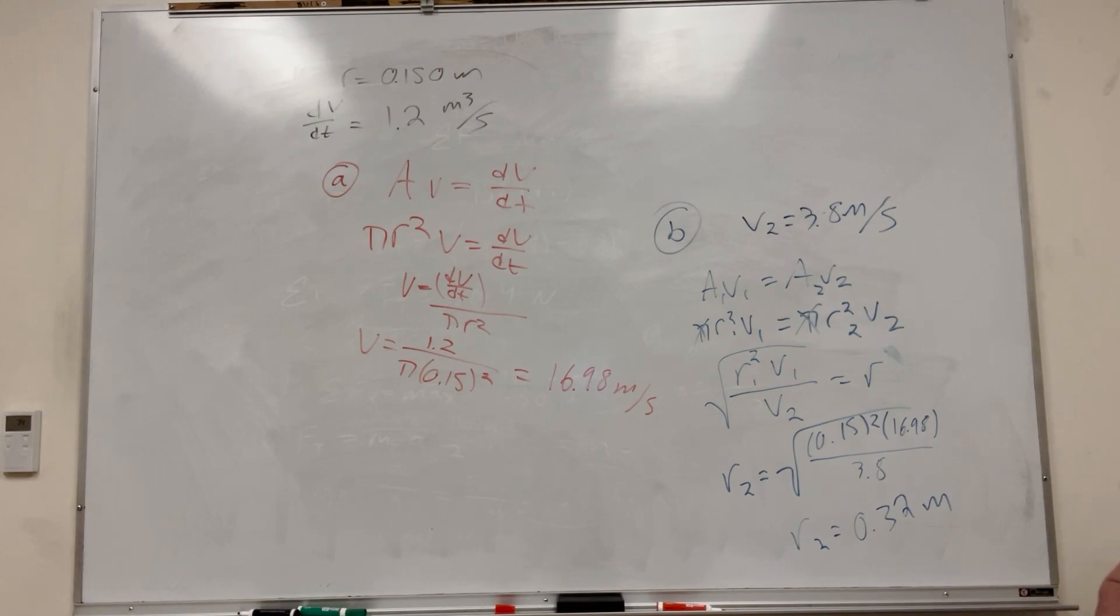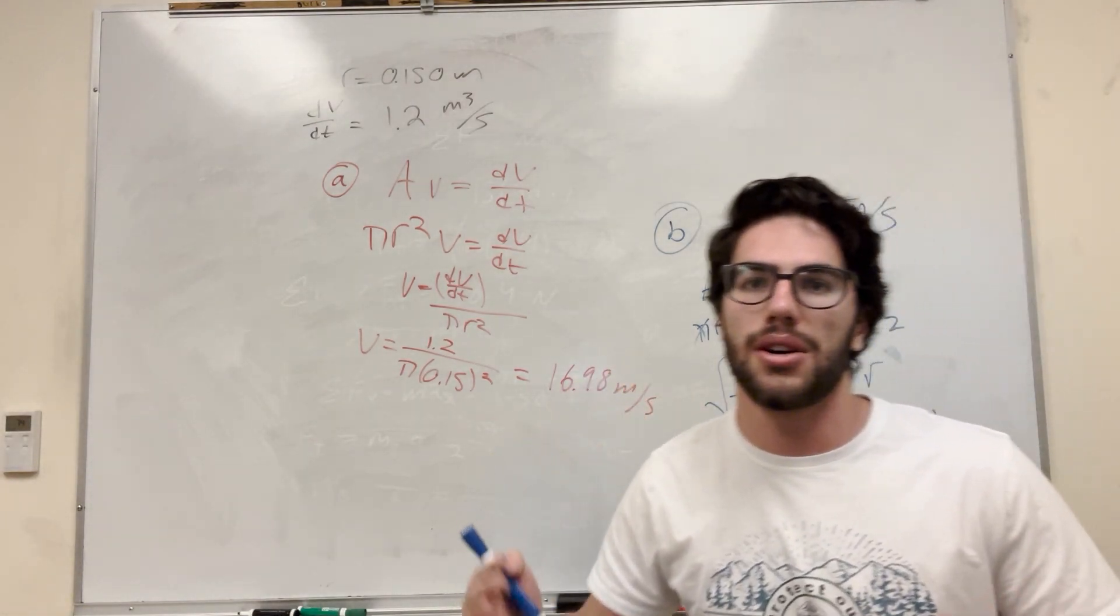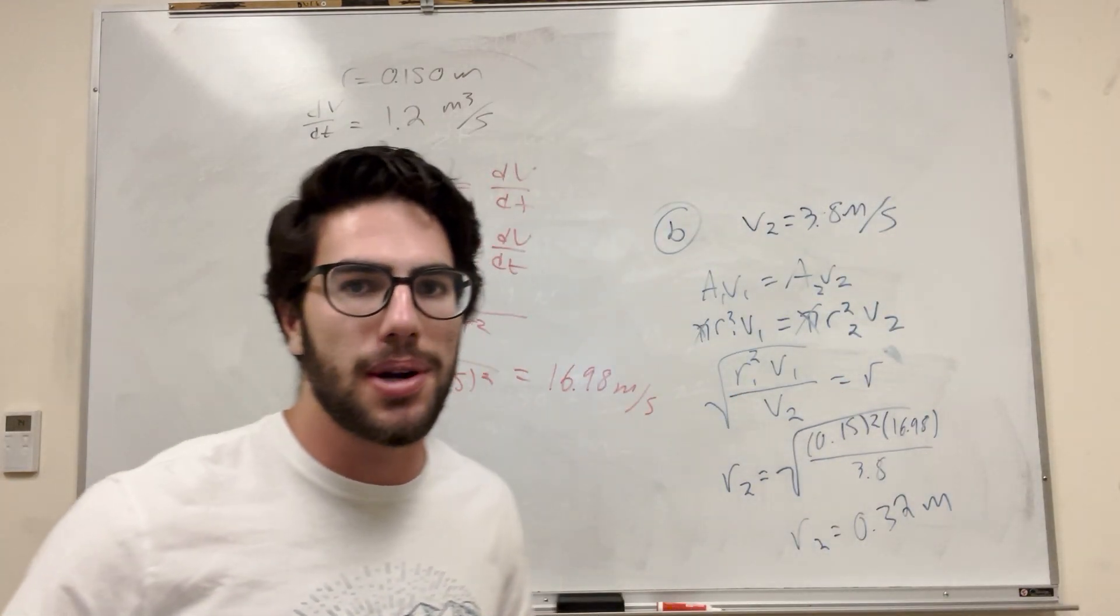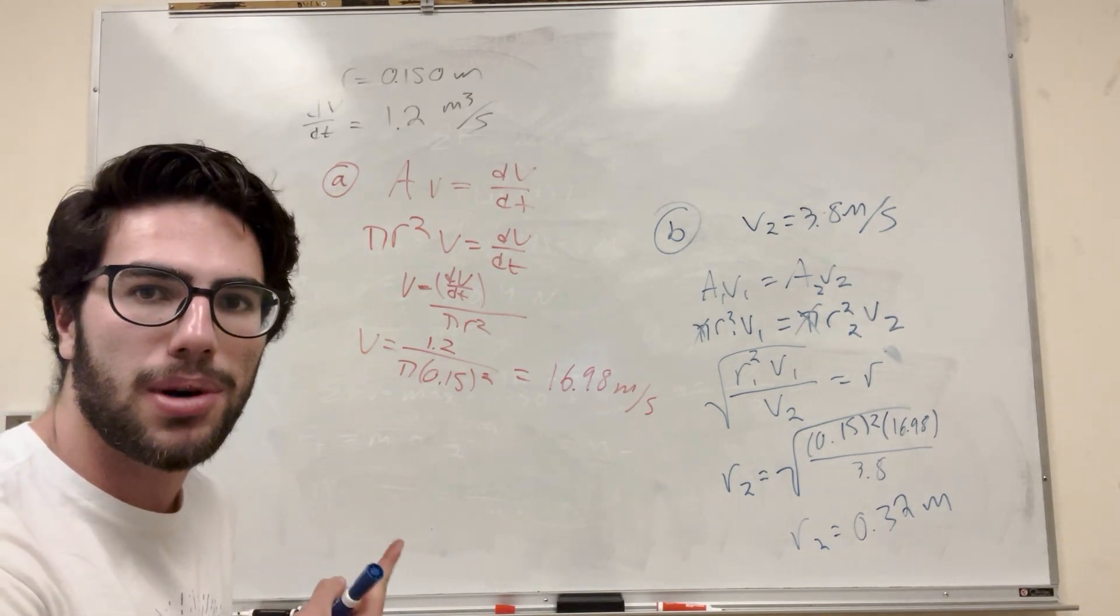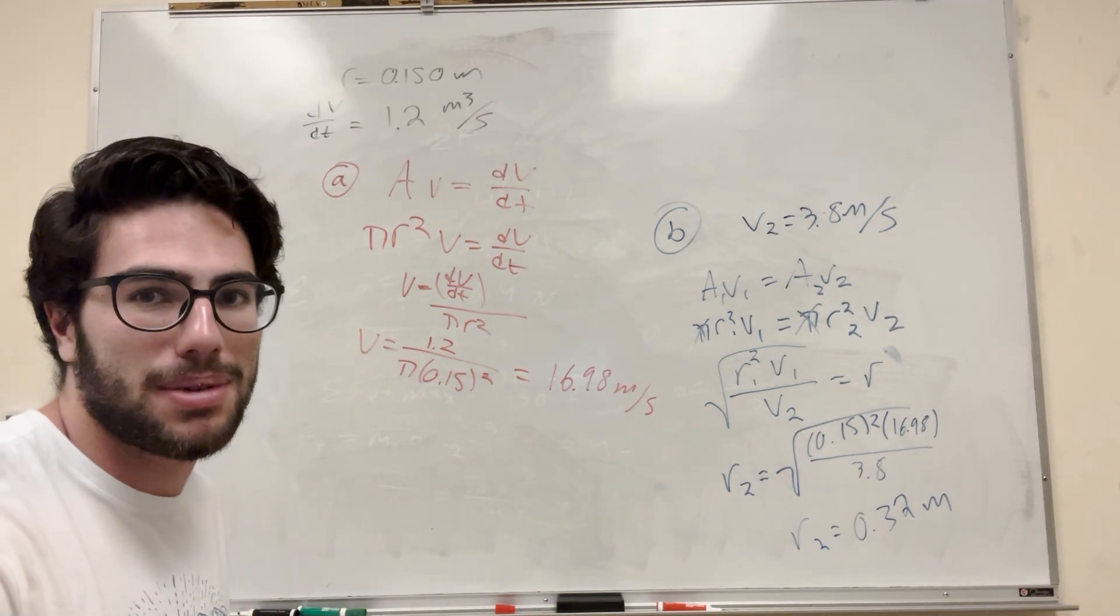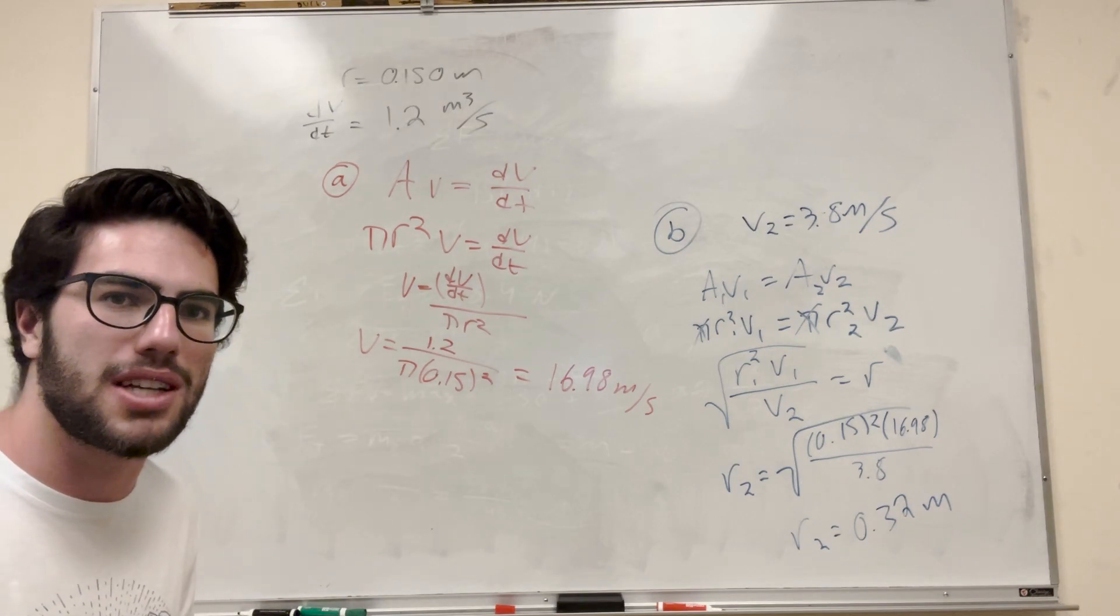The velocity decreased significantly from 17 to 3.8, so the area increased. The radius doubled, which works out well. That's how you solve these kinds of problems. Good luck on your physics homework. If you have any questions, ask them in the comments. Thanks for the support, and I'll see you in the next video.